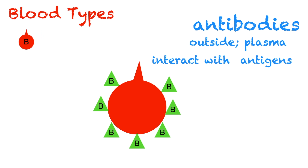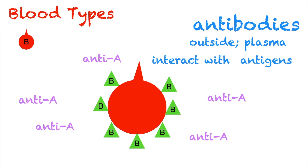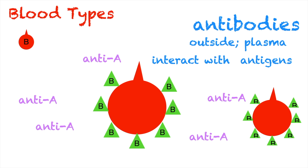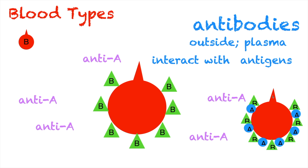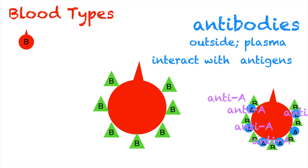Now let's talk about type B blood. Antibodies are usually opposite of the antigens. For type B blood, which has a B antigen, you will have anti-A antibodies. If you get type B blood, there will be no reaction, because these antibodies will only react to antigen A. However, if you get type AB blood — which has both type A and type B antigens — the anti-A antibodies will still interact with the A antigens, causing a transfusion reaction.